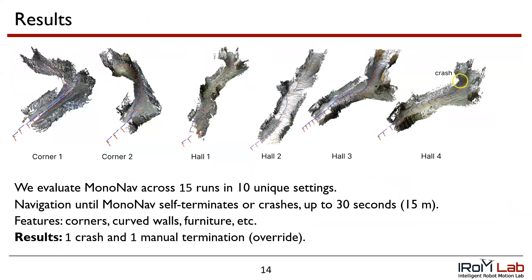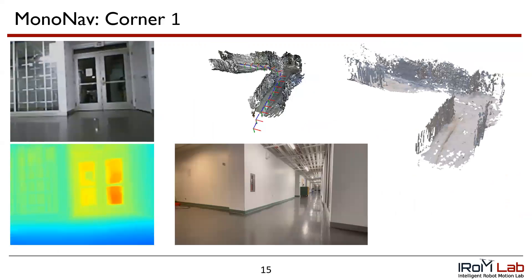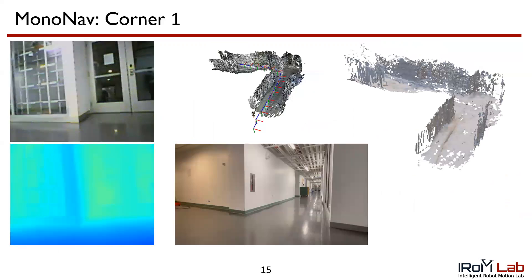We evaluate MonoNav across 15 runs in 10 unique settings. Navigation continues until MonoNav self-terminates or crashes, up to 30 seconds or 15 meters. The hallway features are challenging, including corners, curved walls, columns, and furniture. The results across the 15 runs are one crash and one manual termination; all others were self-terminations. Here is a corner example where MonoNav successfully navigates the corner.